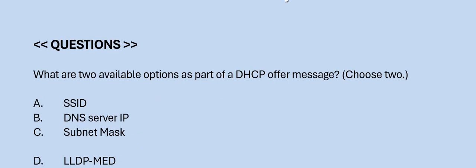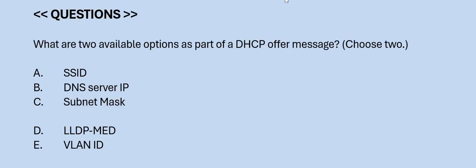Next question: What are the two available options as part of the DHCP offer message? Choose two. Option A: SSID. Option B: DNS Server IP. Option C: Subnet Mask. Option D: LLDP MED. Option E: VLAN ID. The correct answers are Option B and C.